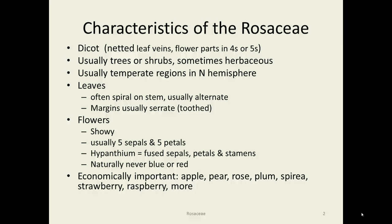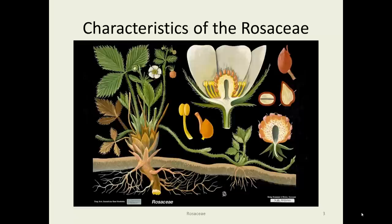Economically very important — there are apples, pears, roses, plums, raspberries, blackberries, and strawberries all in this family. And there are also some decorative things like roses, crab apples, and spirea — things that we use in our landscape quite often.